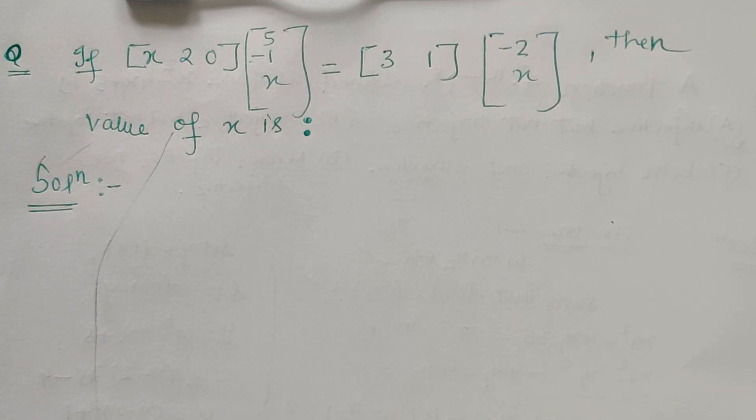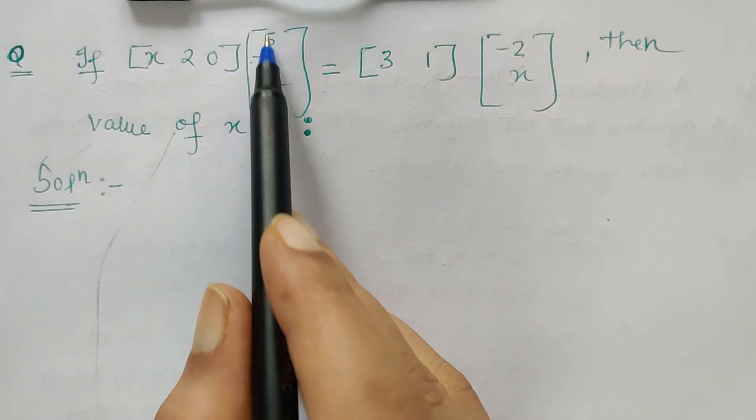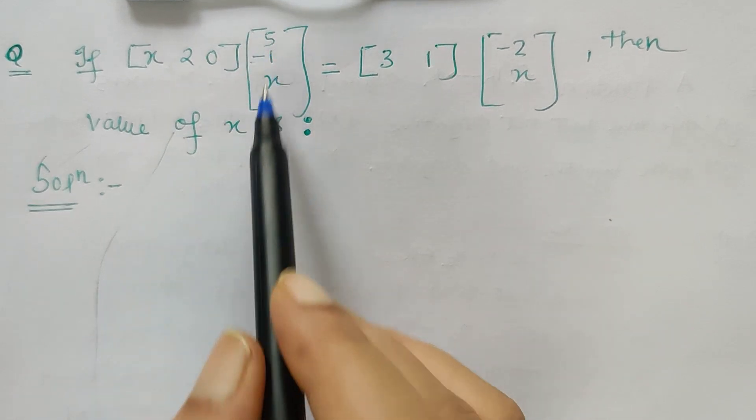Good morning friends, here I have to find the value of x and the given equation of matrix multiplication is given already in the question. So as you know, the row gets multiplied with the column in this fashion, we multiply.